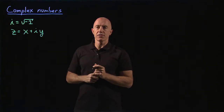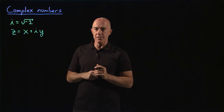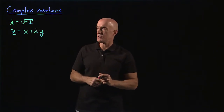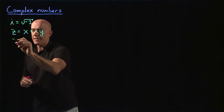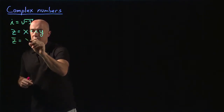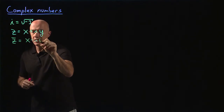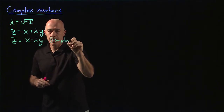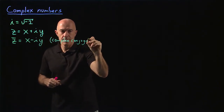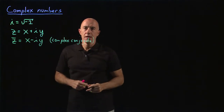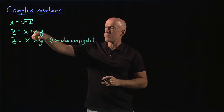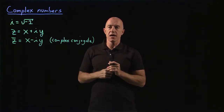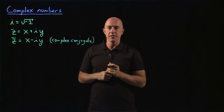There are functions associated with complex numbers that we haven't seen before with real numbers. One of them is called the complex conjugate. We write that as z-bar. That's equal to x minus i·y. All you do is take an expression with real numbers and i, and form the complex conjugate by changing i to minus i.